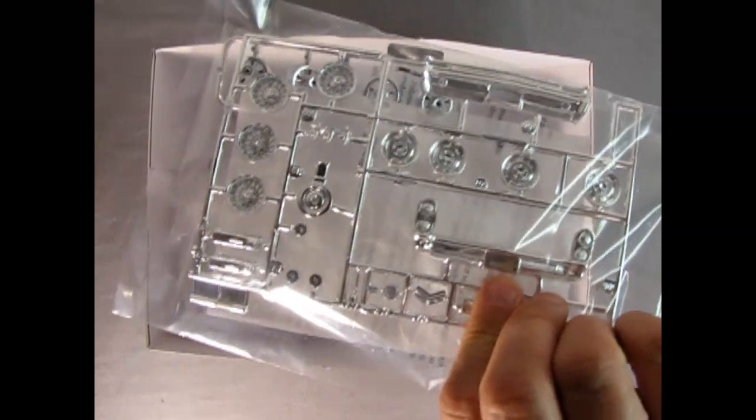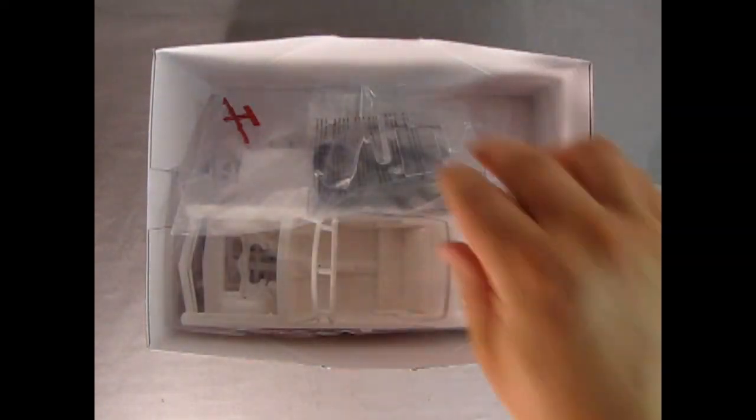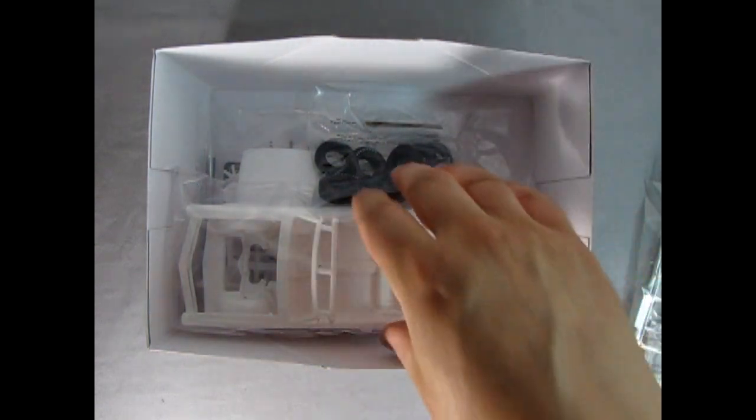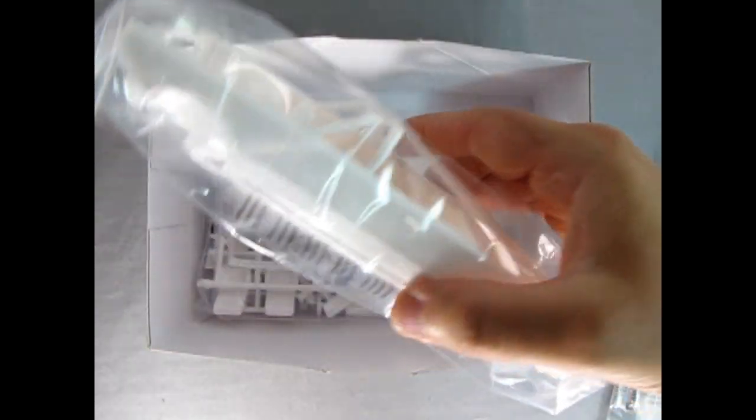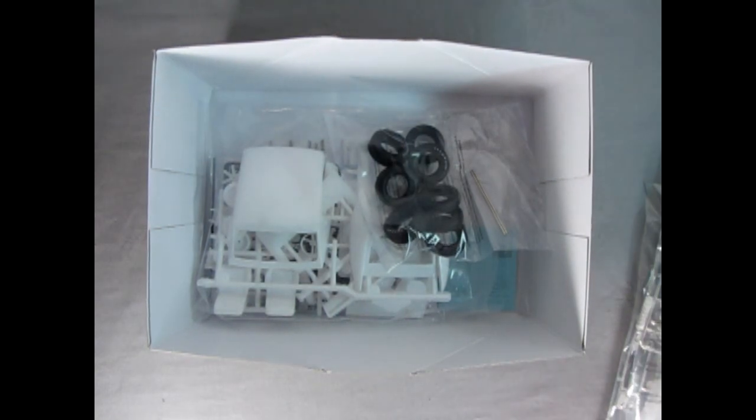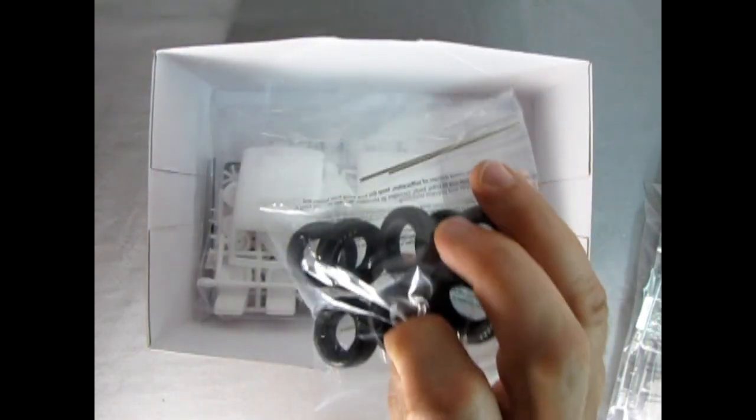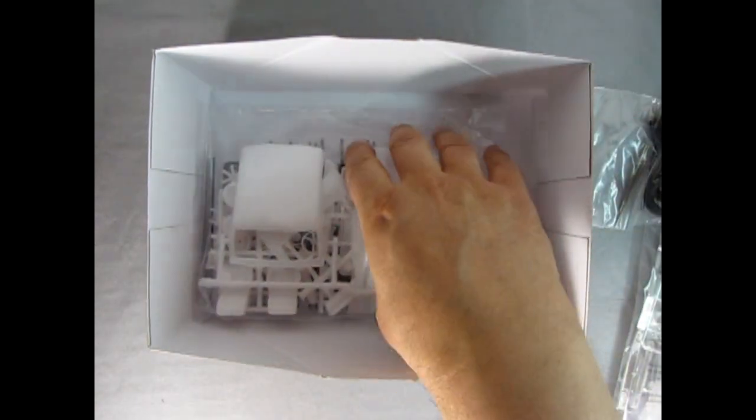First off we get the wonderful chrome parts tree that's all in a bag. The glass components are also in a bag, which is good because it stops it from getting scratched. Here we've got the body and the undercarriage and the interior tub in there. There's our tires and wheels as well as the metal axles. Then here we've got the rest of our white components, including those two roofs that you can see there.